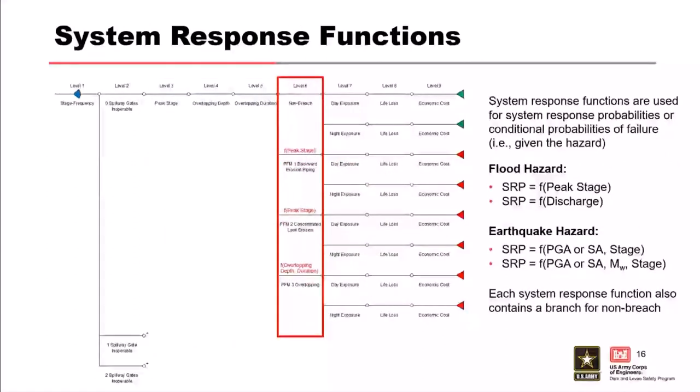Level six contains system response functions, also called failure functions. These contain the potential failure modes evaluated in the risk analysis, with each potential failure mode represented by a single branch. That branch contains system response probabilities conditioned on the transform function values in one or more preceding branches. System response probabilities can be functions of variables like stage, peak ground acceleration, or spillway discharge. The sub-event trees are used to estimate the branch probabilities for each potential failure mode. Each system response function also contains a corresponding branch for non-breach to satisfy the collectively exhaustive requirement.